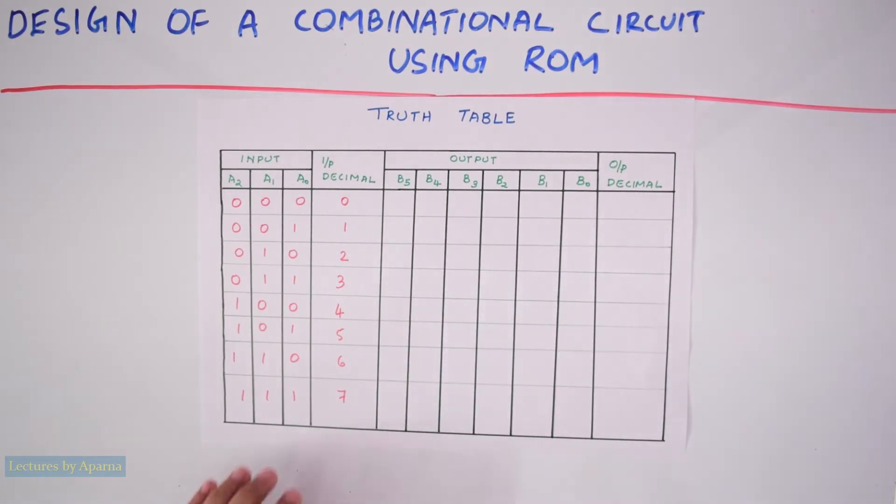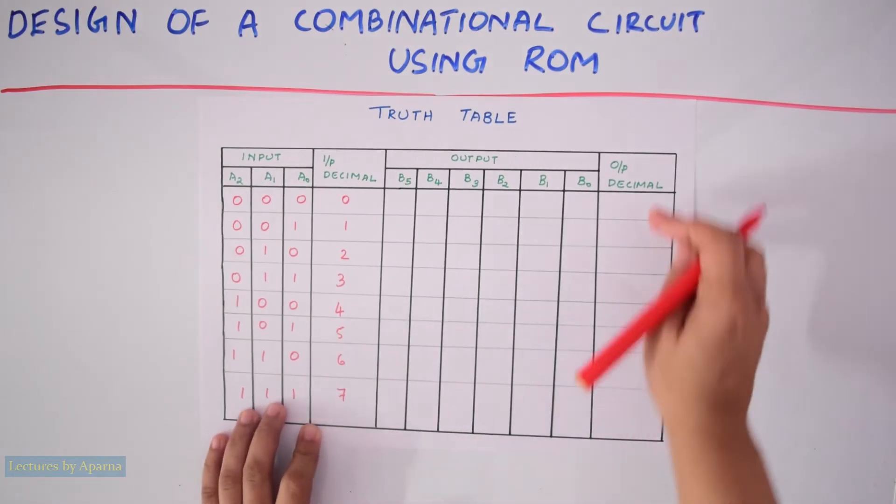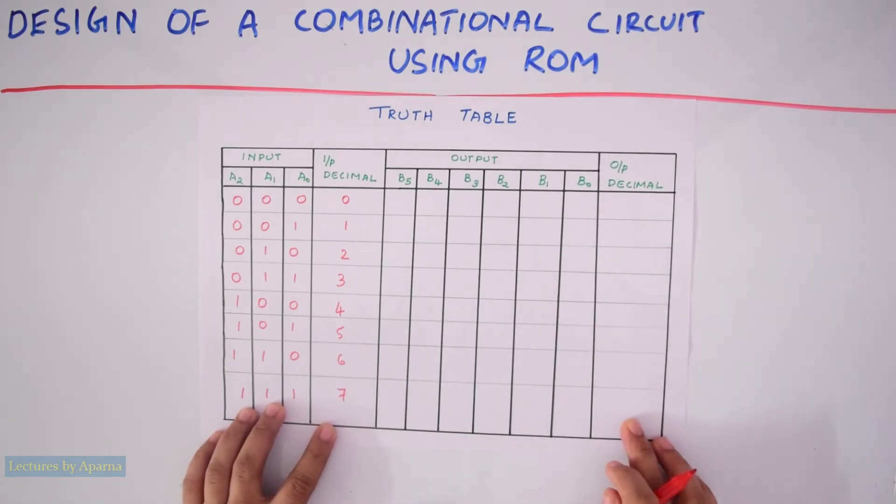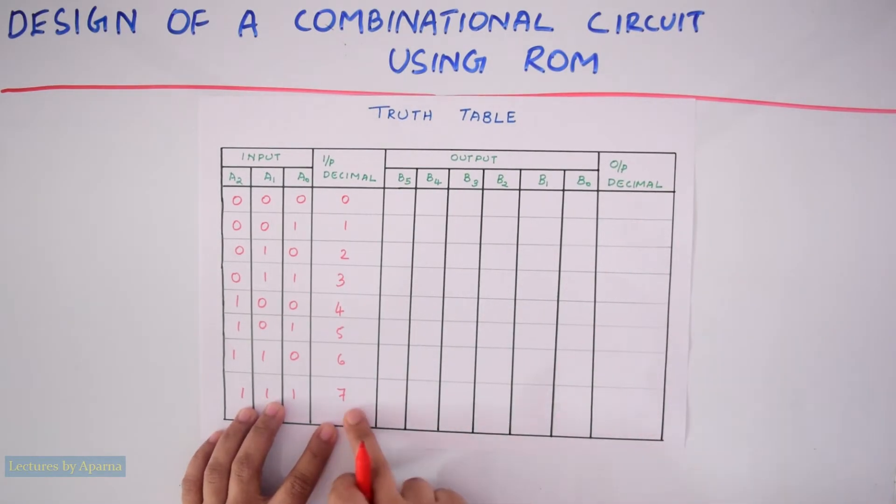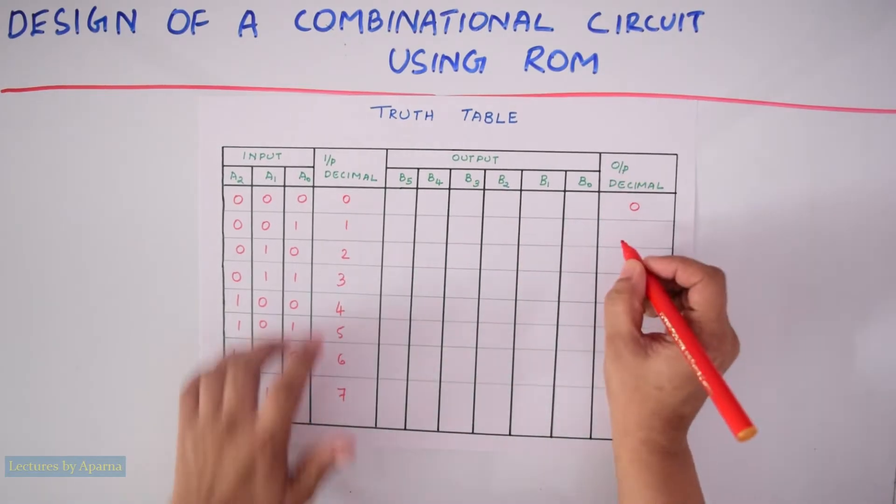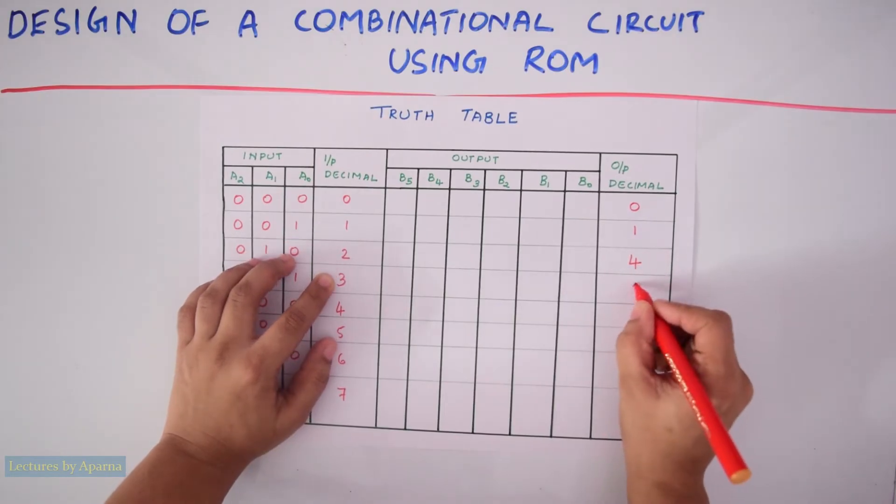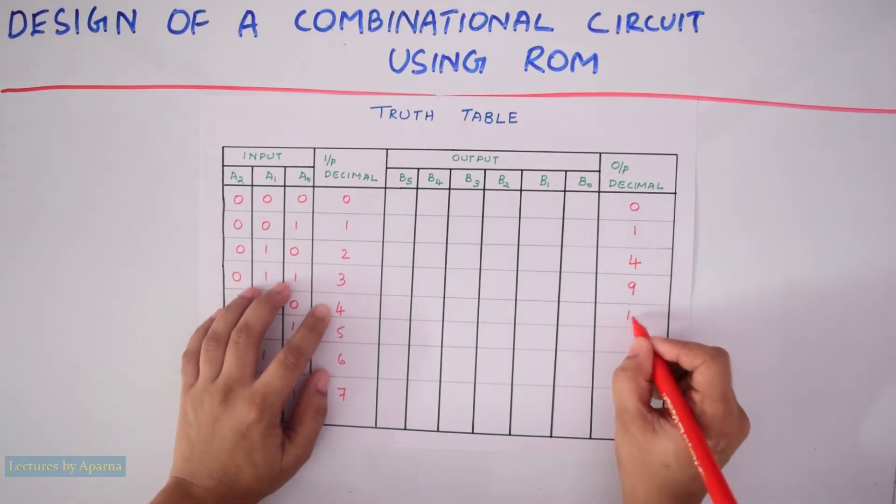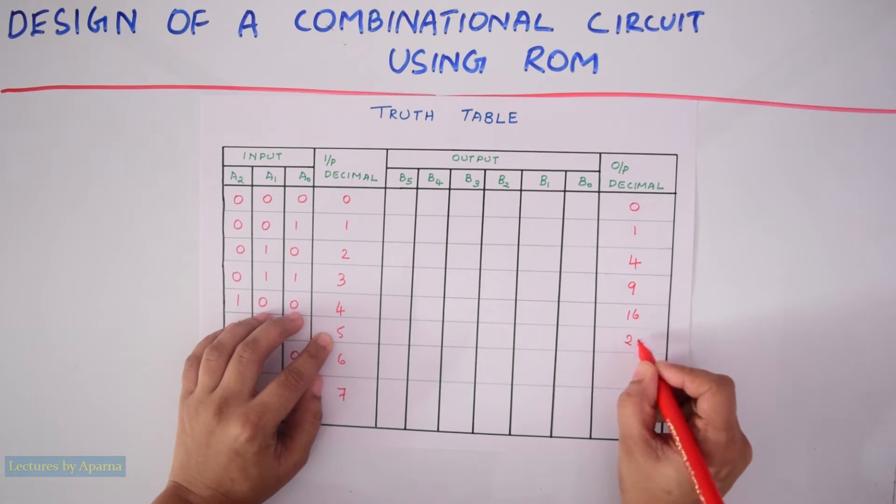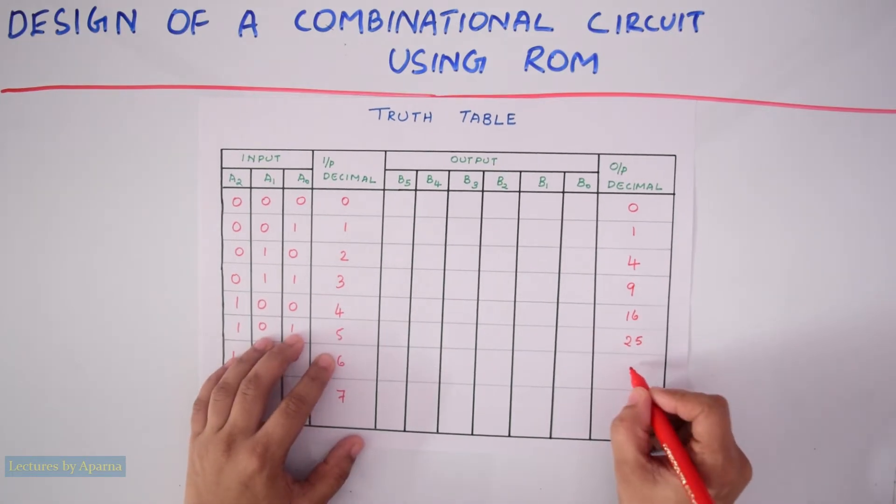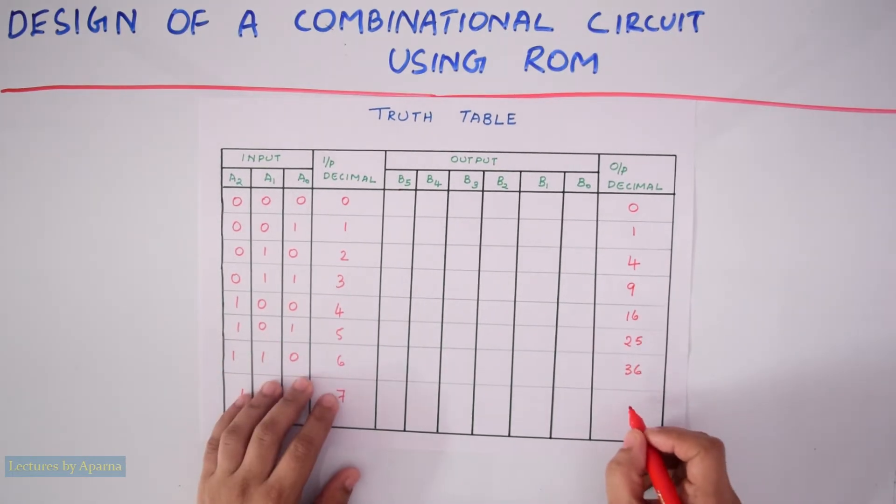Next, I will write the square of these numbers in this output decimal value. At the output, you should get the square of these numbers. So it will be 0, 1, 2 square is 4, 3 square is 9, 4 square is 16, 5 square is 25, 6 square is 36, and 7 square is 49.